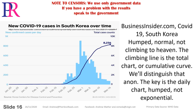Businessinsider.com, COVID-19, South Korea: humped, normal, not climbing to heaven. The climbing line is the total or cumulative chart — we'll distinguish that shortly. The key is the daily chart: humped, not exponential.